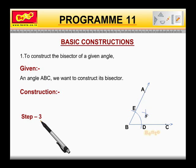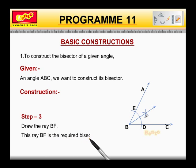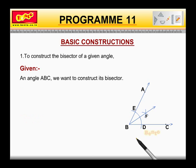Step 3. Draw the ray BF. This ray BF is the required bisector of the angle ABC.